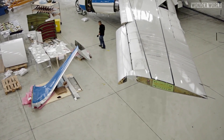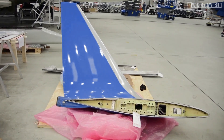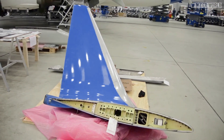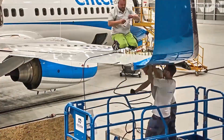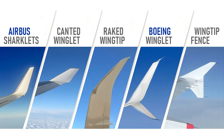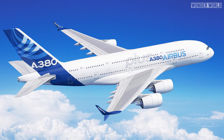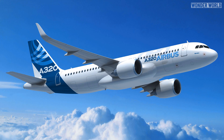Older planes are often retrofitted with winglets to improve fuel efficiency, though some winglets are easier and cheaper to retrofit than others. Not all aircraft have the same type of winglets — some are equipped with different aerodynamic devices like sharklets or blended winglets, which offer varying levels of drag reduction and fuel savings depending on the aircraft's design and flight profile.